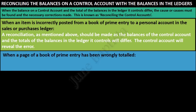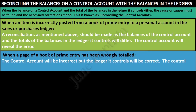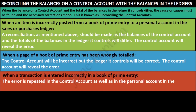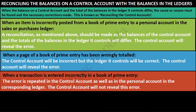Second, when a page of a book of prime entry has been wrongly totalled, the control account will be incorrect but the ledger it controls will be correct. The control account will therefore reveal the error as there will be a difference in the two balances. Third, when a transaction is entered incorrectly in a book of prime entry, the error is repeated in the control account as well as in the personal account in the corresponding ledger. Hence, the control account will not reveal this error as there will be no difference in the balances.